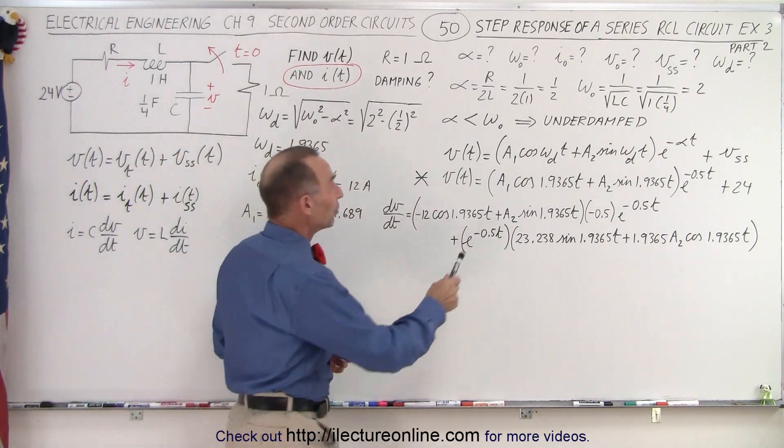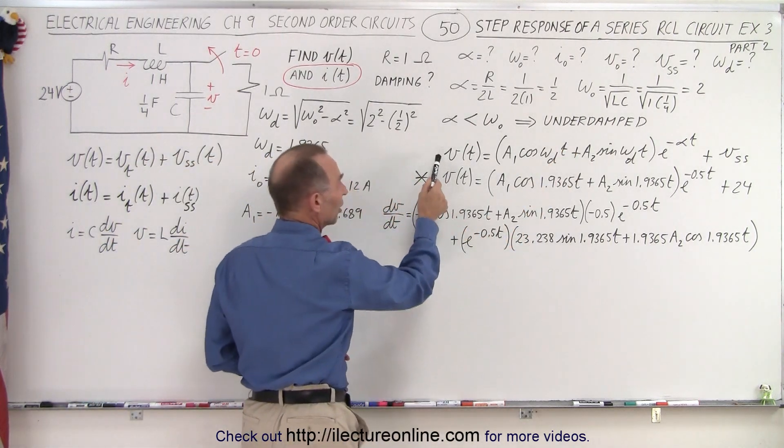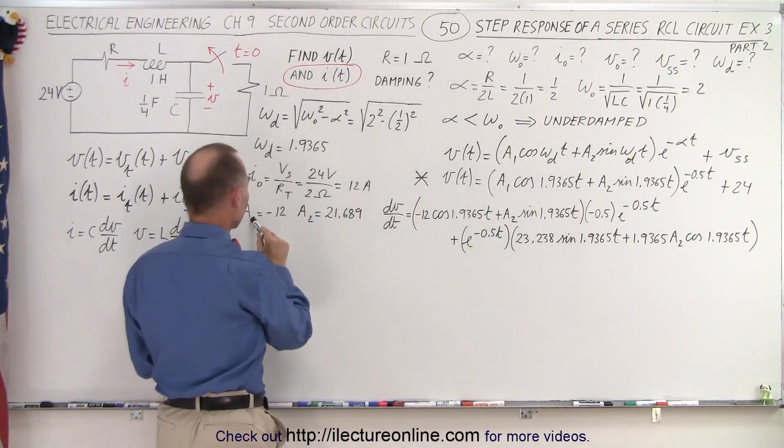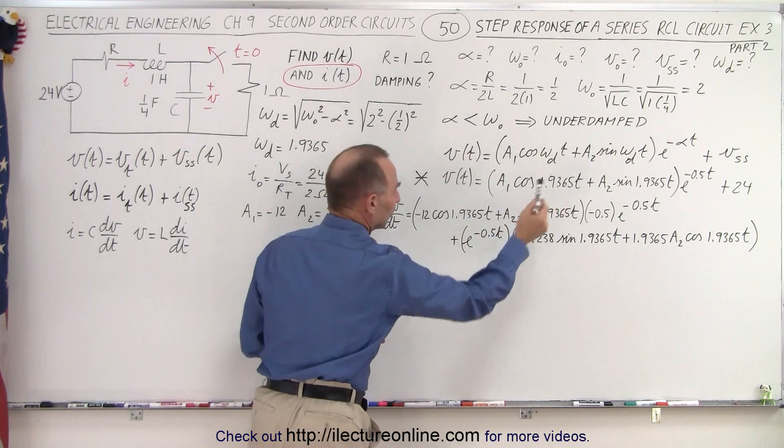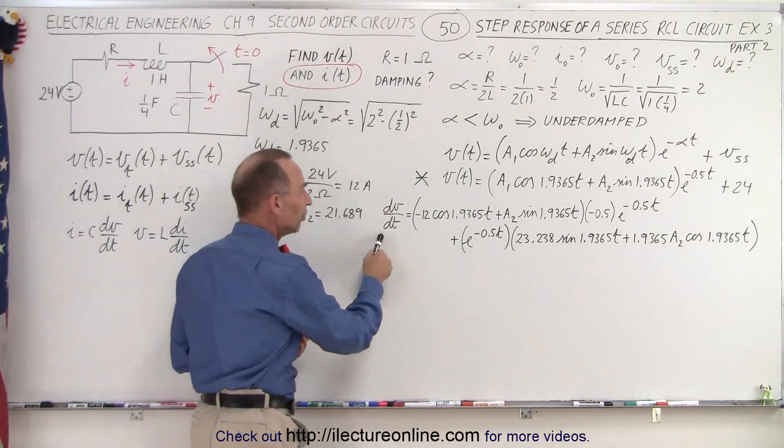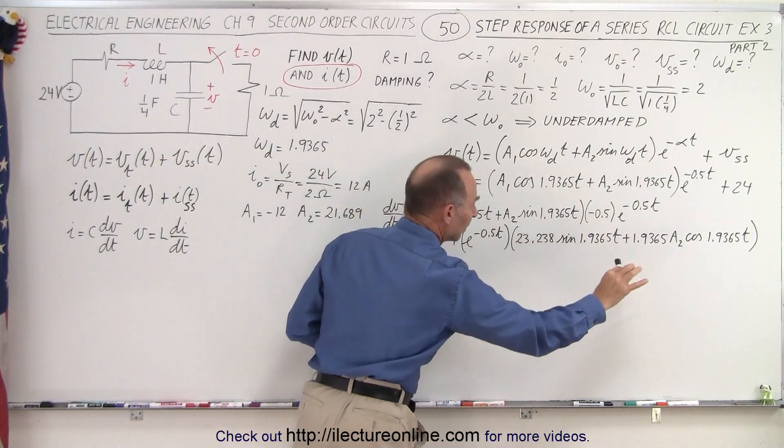It ended up being an underdamped case, so we found the general equation right here. We found the values for A1 and A2, when we plug A1 and A2 in we got the equation for the voltage as a function of time. Then by taking the derivative of a product, we end up with this equation right here.